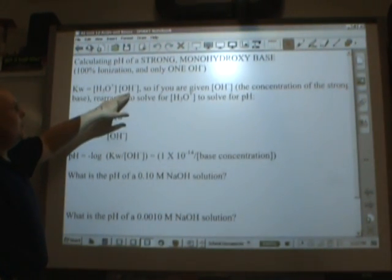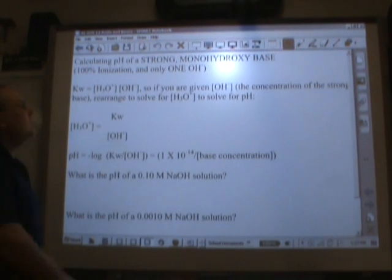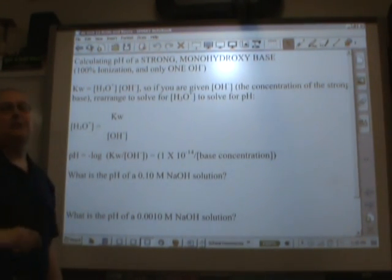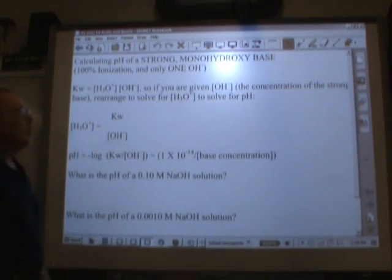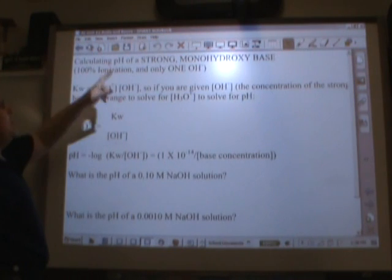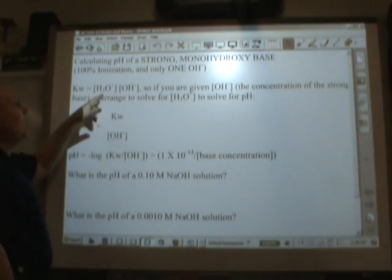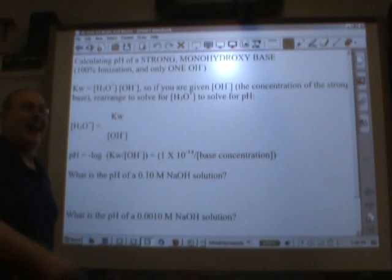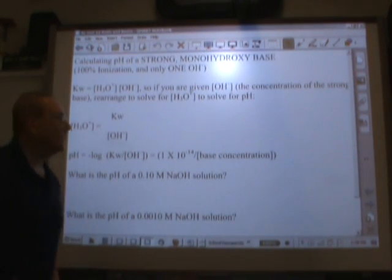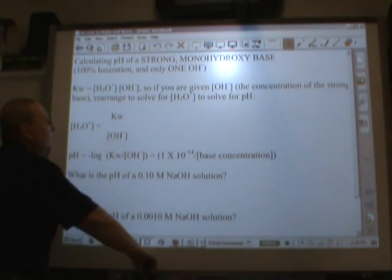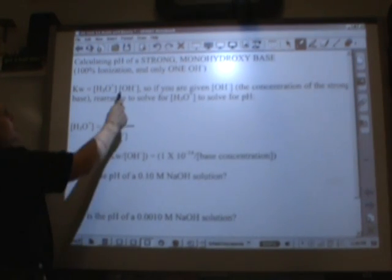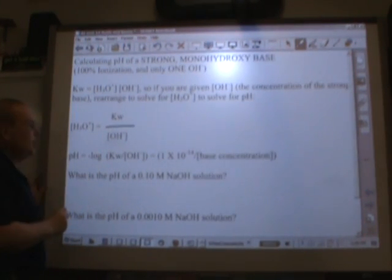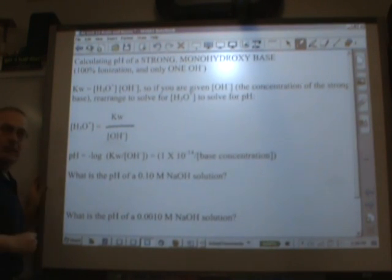When we're dealing with bases, we know the concentration of hydroxide. We don't know the concentration of hydronium, which is what we really need to find pH. So using the Keq expression, knowing Kw and knowing the OH- concentration, find H3O+, and then you can take the negative log of it. So H3O+ is equal to Kw divided by OH-, right? Divide both sides by OH, and then you take the negative log of it.